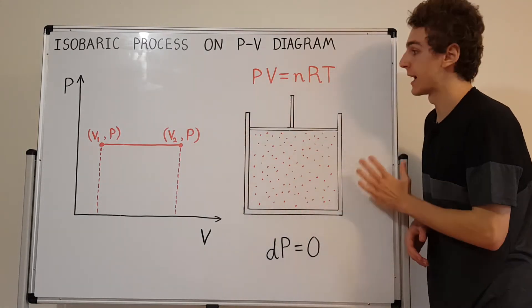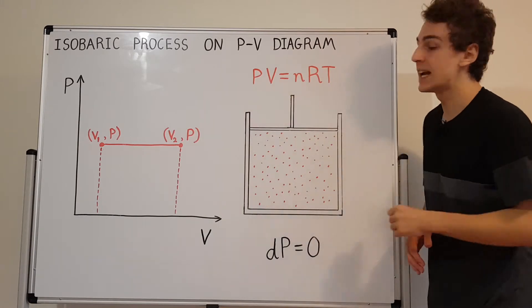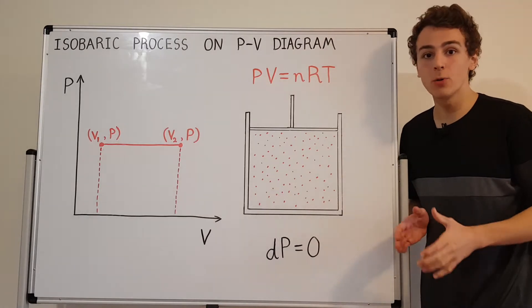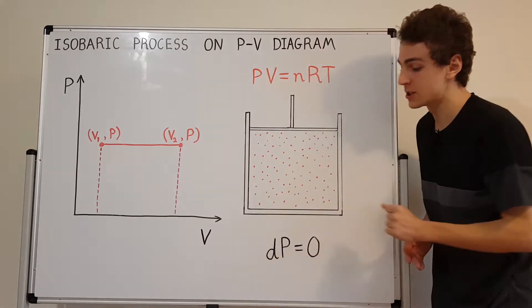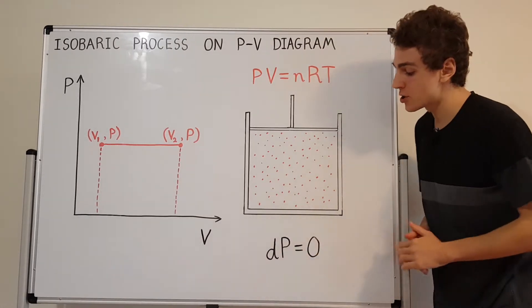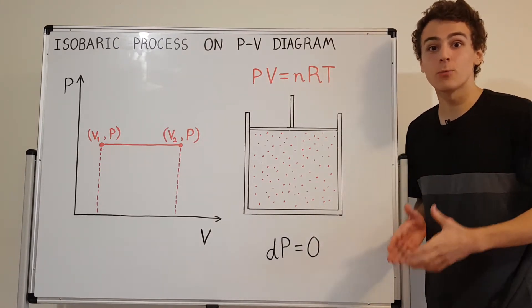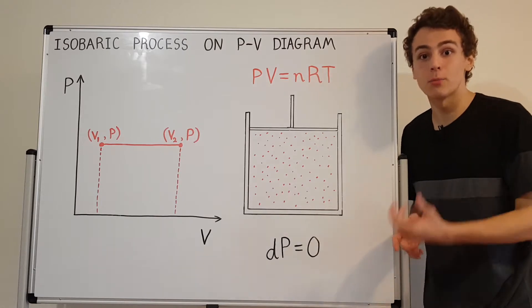This is an ideal gas. PV equals nRT is satisfied for this ideal gas. One important condition we're going to impose is dP equals zero. The change in pressure is zero. That means the pressure is constant, and that's what the word isobaric means—constant pressure.